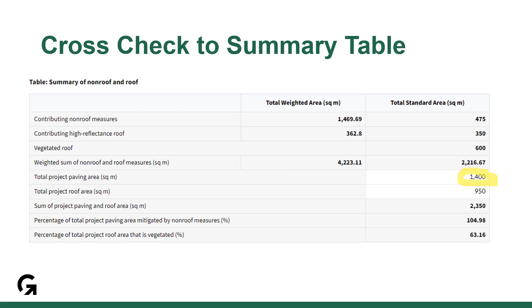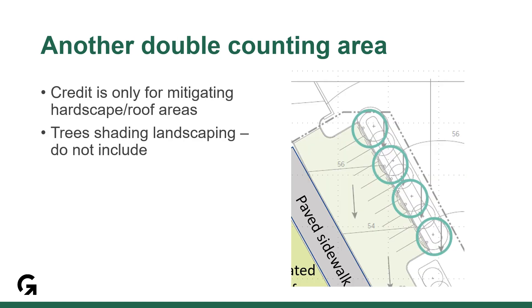That figure cannot be more than the denominator, which is the total project paving area. It can be less, since we might choose not to include all hardscape areas in our mitigation strategies, but the non-weighted hardscape areas should never be more than the total project paving area. Remember, this credit's requirements are focused on mitigating hardscape and roof areas, so don't include the shading of trees provided over landscaping, but only over hardscape.